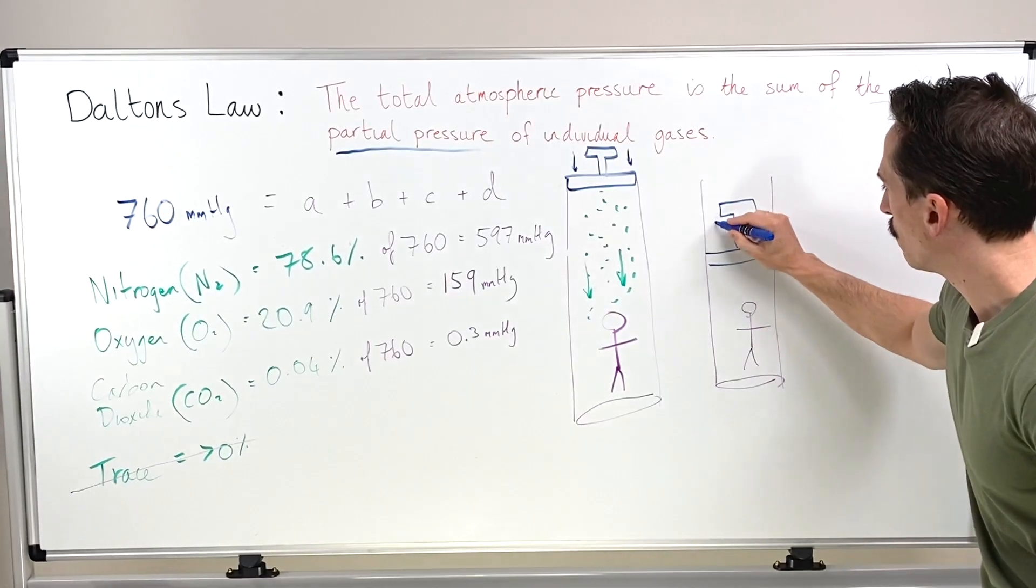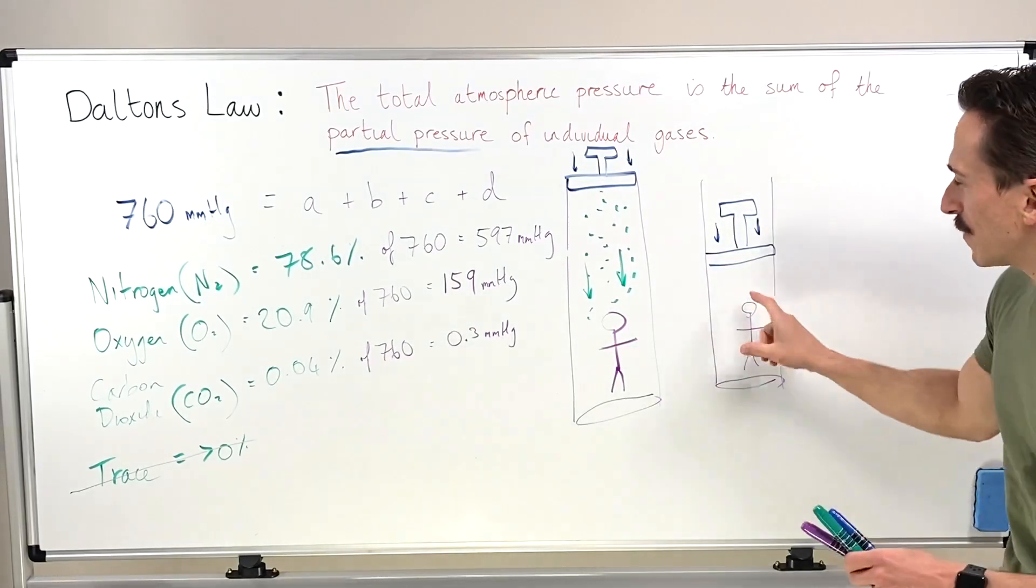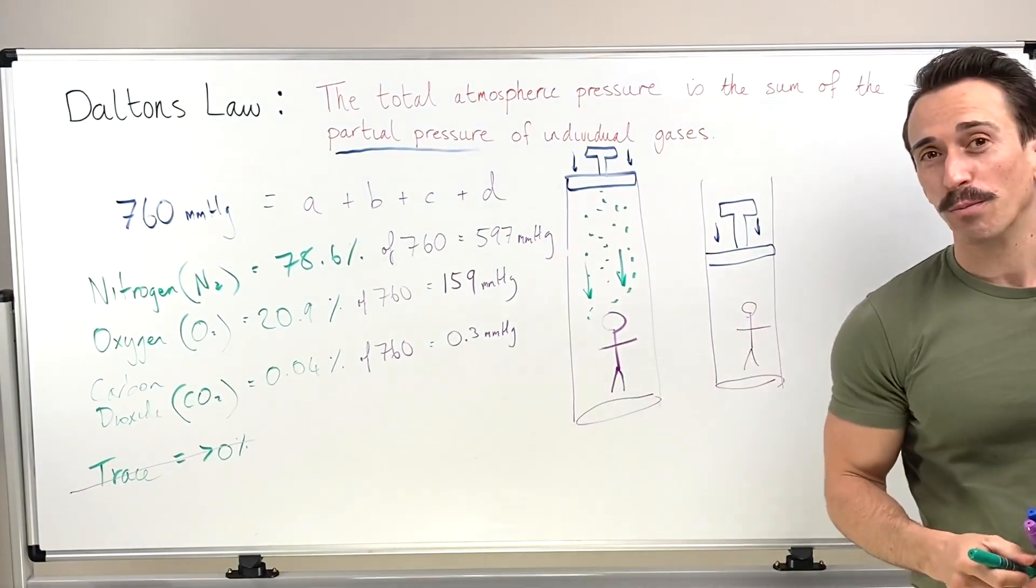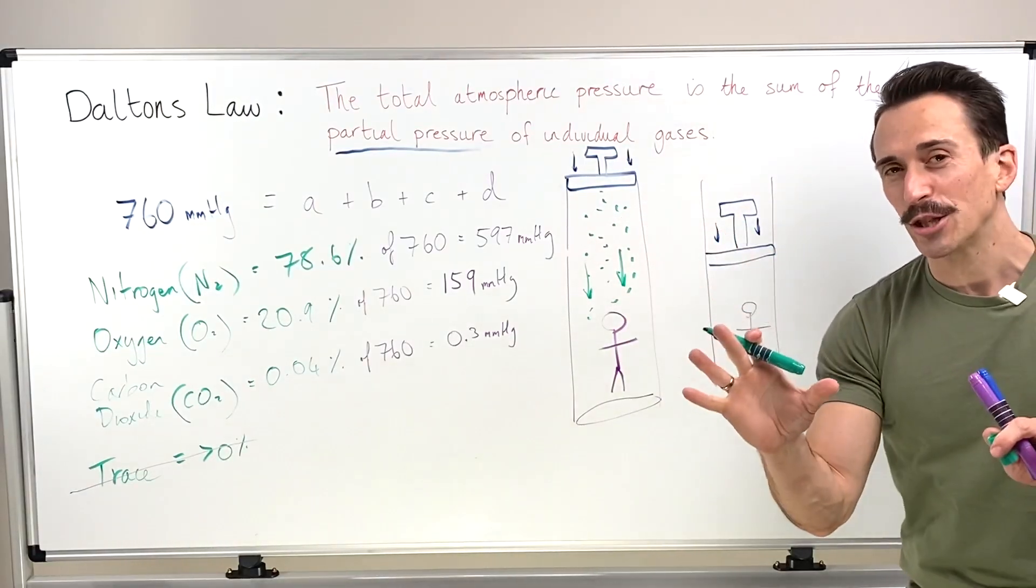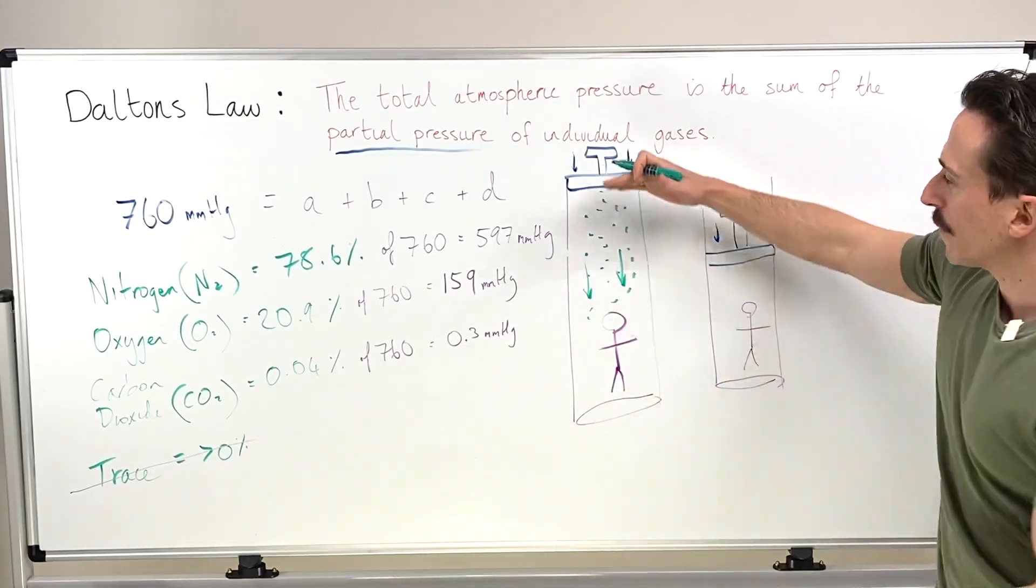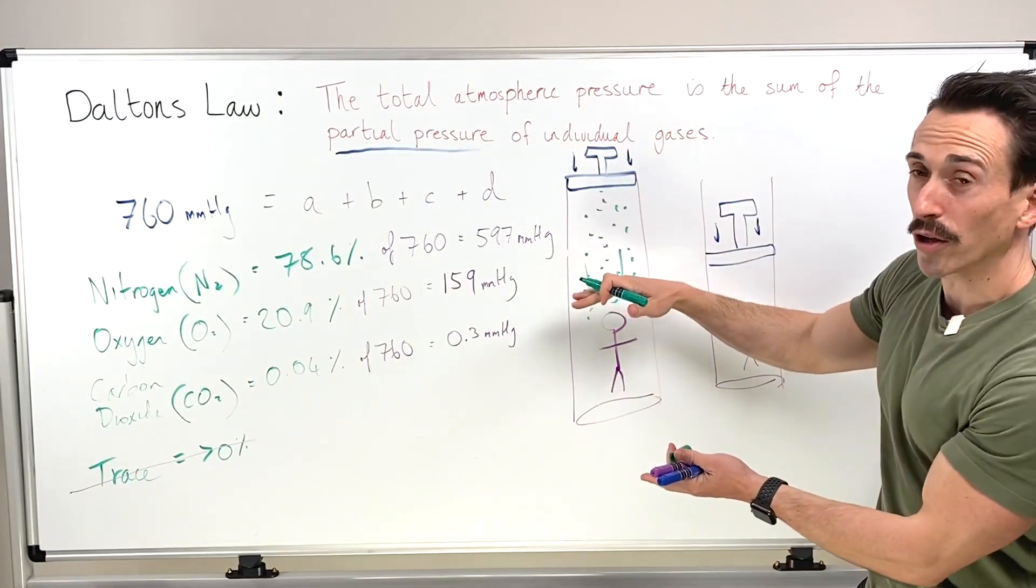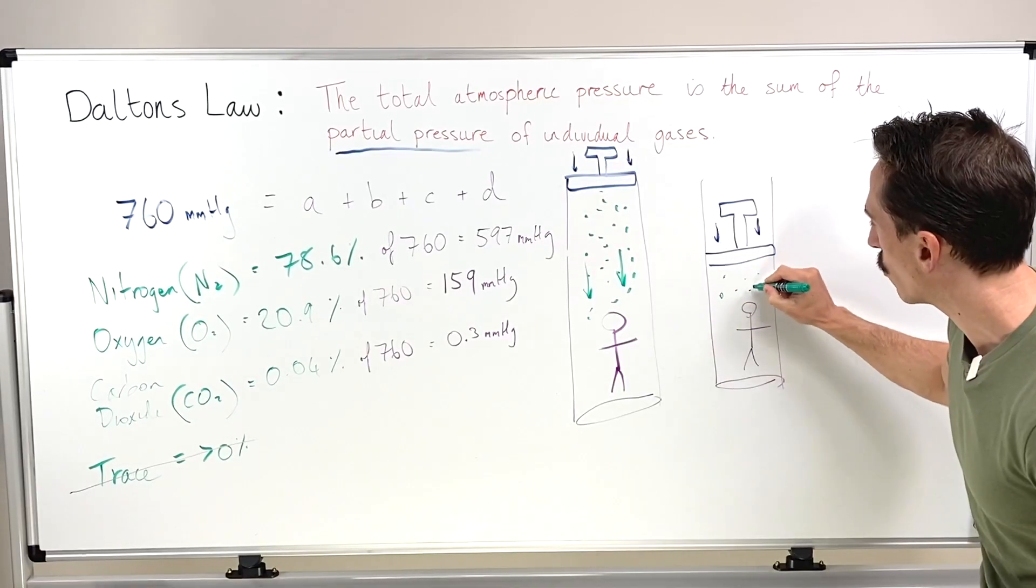By pushing down, now what we've effectively done is we've increased the atmospheric pressure because of something called Boyle's Law. I've done a video on Boyle's Law. There's an inverse relationship between the volume of a container and the pressure of the container. So if I decrease the volume, I've increased the pressure and that's what's happening here.